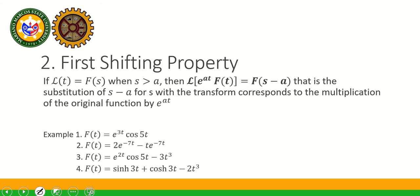The second property is the first shifting property. If the Laplace of F(T) equals F(S) when S > A, then the Laplace of e^(AT)·F(T) is equal to F(S − A). That is, substitution of S − A for S in the transform corresponds to multiplication of the original function by e^(AT). Let's try Example 1 of the first shifting property.